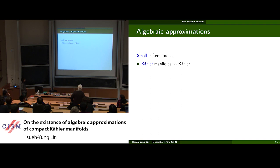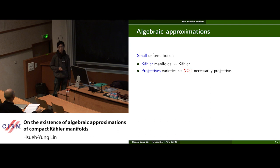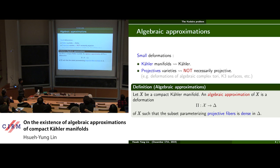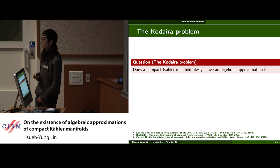For small deformations, we know that small deformations of Kähler manifolds remain Kähler. But for projective varieties, small deformations might no longer be projective anymore. There are examples of deformations of complex tori or K3 surfaces which become non-projective. This justifies that the following definition is non-trivial. Let X be a compact Kähler manifold. An algebraic approximation of X is a deformation of it such that the subset parametrizing projective fibers is dense in the family. And here is the Kodaira problem: given a compact Kähler manifold, can we always find an algebraic approximation of it?